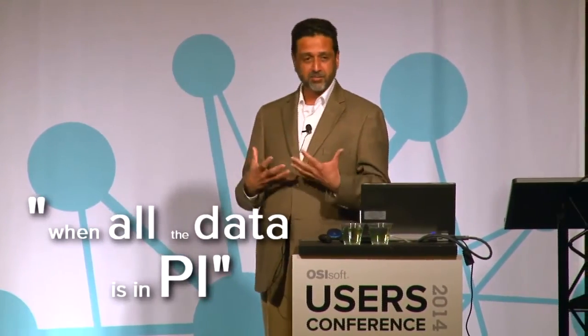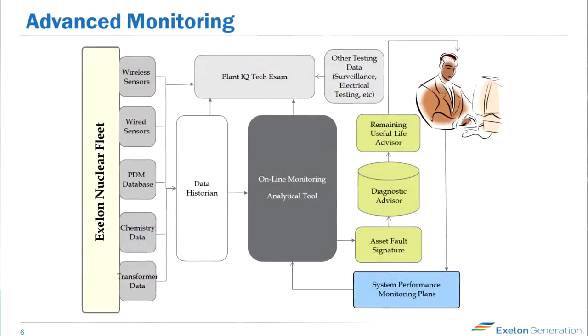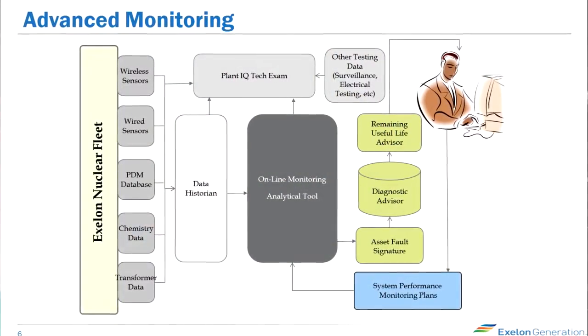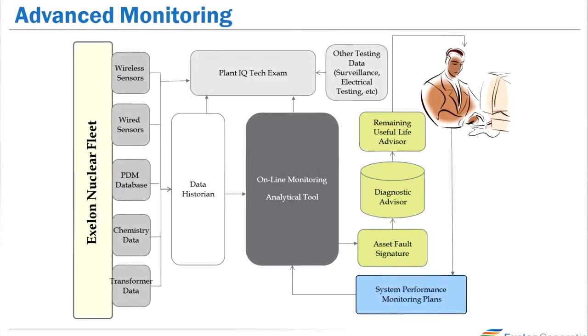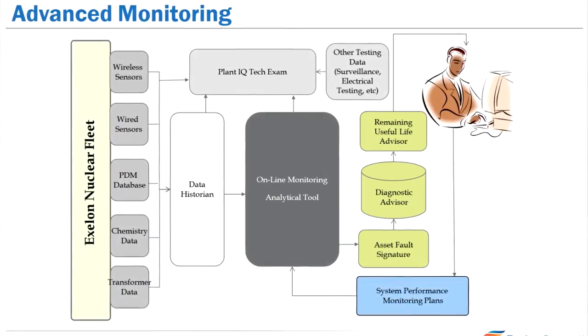Vibration data is in one server, all your client process data is in another server, and the other one is somewhere else or sitting in an Excel spreadsheet with an engineer. Now when all the data is in PI, you can lay down all your data in one place and see where the anomaly is actually starting.